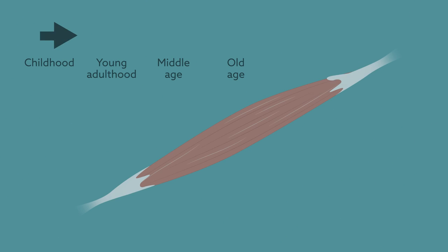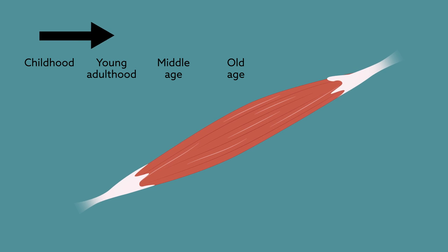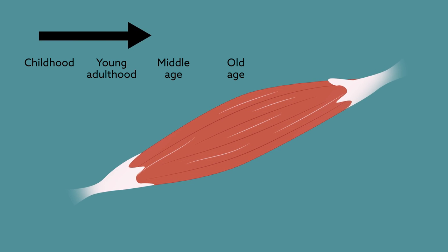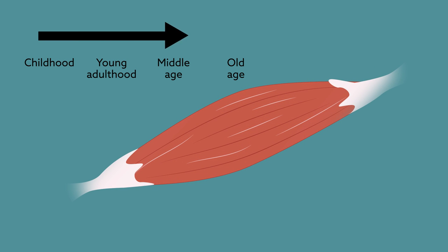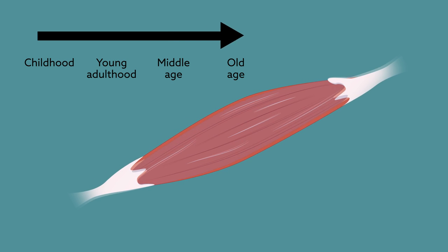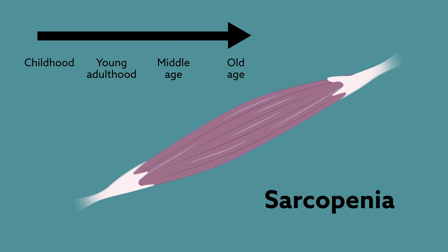From childhood through young adulthood, your muscles continually grow larger and stronger. At some point in midlife, however, this trajectory switches course and many muscles begin to deteriorate, a progression termed sarcopenia.